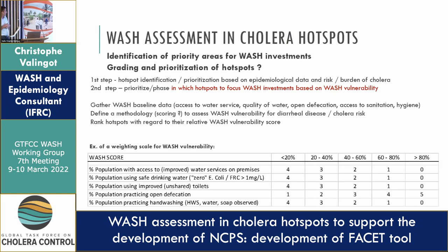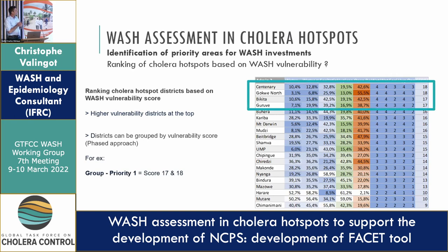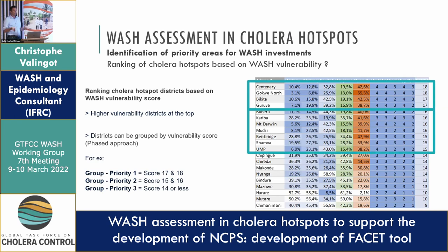This is an example of how we could do this: we could use a number of indicators, and based on the service level, a score would be attributed. The total score — this is just a simulated example, not real WASH service data — would allow us to probably select the number of priority hotspots for the first phase and for the second phase. The real idea here is to think ahead: the total amount of WASH investment in all cholera hotspots may be too large for fundraising, and by presenting it in phases, we might be more successful.